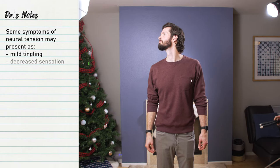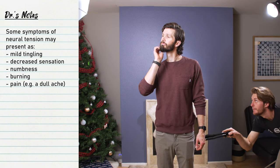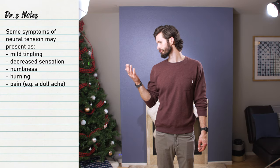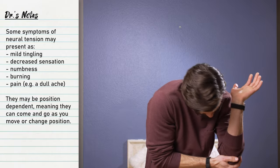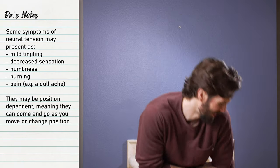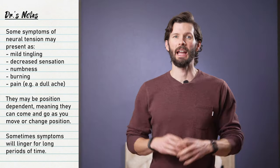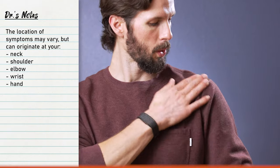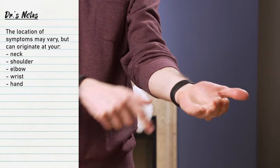Symptoms of neural tension can be challenging to accurately identify due to the varying sensations you may experience and their location. They can present as mild tingling or just decreased sensation. They can also be more advanced with numbness, burning, and/or pain such as a dull ache. The symptoms may be position dependent, meaning they may come and go quickly with positional changes of your upper extremities. Some symptoms can linger for longer periods due to unresolved compression. Symptoms most often occur at the elbow, wrist, or hand.